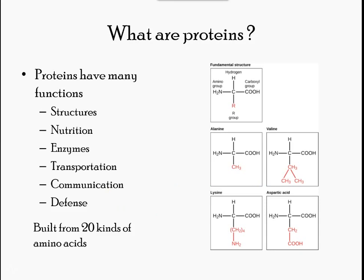Proteins are one of the most abundant organic molecules in living systems and have the most diverse range of functions of all macromolecules. Proteins may be structural, regulatory, contractile, or protective. They may serve in transport, storage, or membranes, or they may be toxins or enzymes. Each cell in a living system may contain thousands of different proteins, each with a unique function.